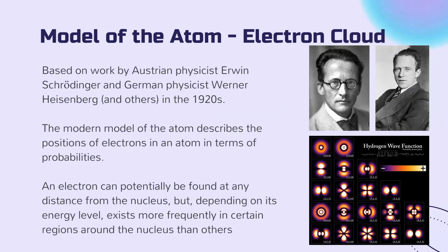After that, the electron cloud model was developed, based in part on work by Austrian physicist Erwin Schrödinger and German physicist Werner Heisenberg in the 1920s. This modern model of the atom describes the positions of electrons in an atom in terms of probabilities. An electron can potentially be found at any distance from the nucleus, but, depending on its energy level, exists more frequently in certain regions around the nucleus than others. While this is the most accurate description of what's actually going on in an atom, it's not necessarily the most practical model for us to work with.